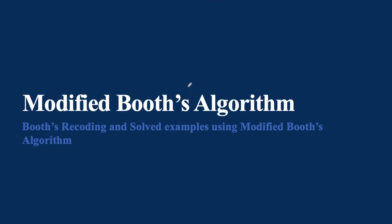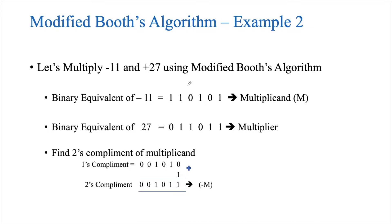In this video, we will be multiplying two different values using Modified Booth's Algorithm. We have already discussed an example, and the link for that particular video is posted in the description box. Here is Example 2. We are about to multiply two different values: minus 11 and plus 27, using Modified Booth's Algorithm.